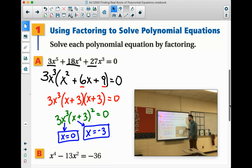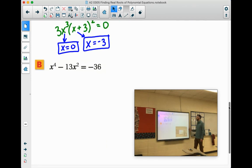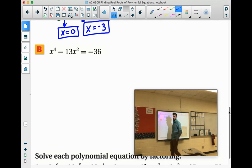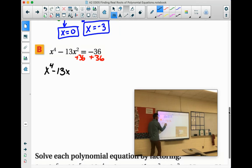Just throwing you a little preview there. Let's try this one out. x to the 4th minus 13x squared equals negative 36. It's got to equal 0 when we're solving this. So we have to add the 36 to both sides.